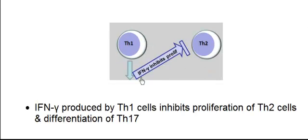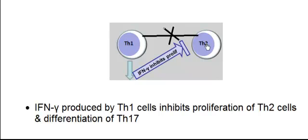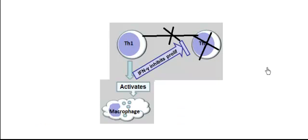One important thing to note: interferon gamma produced by T helper 1 cells will inhibit the proliferation of T helper 2 cells. So the product of T helper 1 cells stops the production of T helper 2 cells. At the same time, the products of T helper 1 cells will lead to further activation of macrophages, helping macrophages destroy the pathogen.